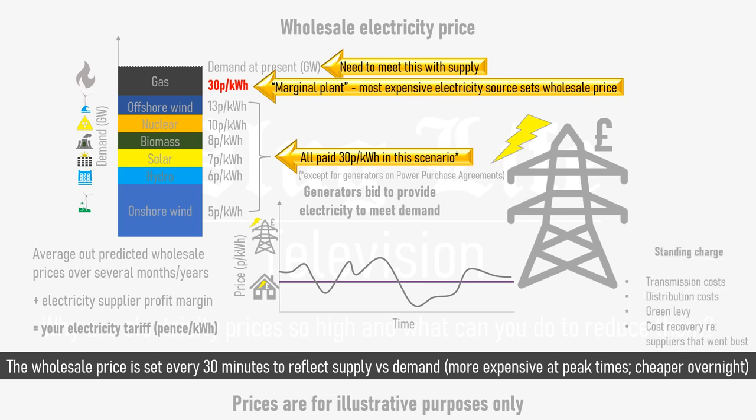Your standing charge — the daily charge you pay regardless of how much electricity you use — is made up of grid transmission and distribution charges, the green levy, and the cost of recovery associated with energy providers that have gone bust. Since so many smaller suppliers went bust recently, owing to profit margins that were just big enough to hedge against seasonal variances but nowhere near big enough to hedge against the large external factors that have driven wholesale electricity prices upwards today, your standing charge is likely much higher than it was a few months ago.